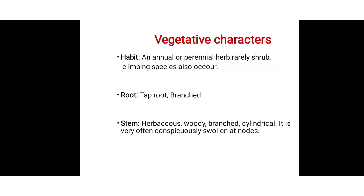The root is a taproot with branches. The stem is herbaceous, woody, branched, and cylindrical. It is very often swollen at the node. Herbaceous or woody branched stems are present. The stem is swollen at the node, and the root is branched because the node is branched.